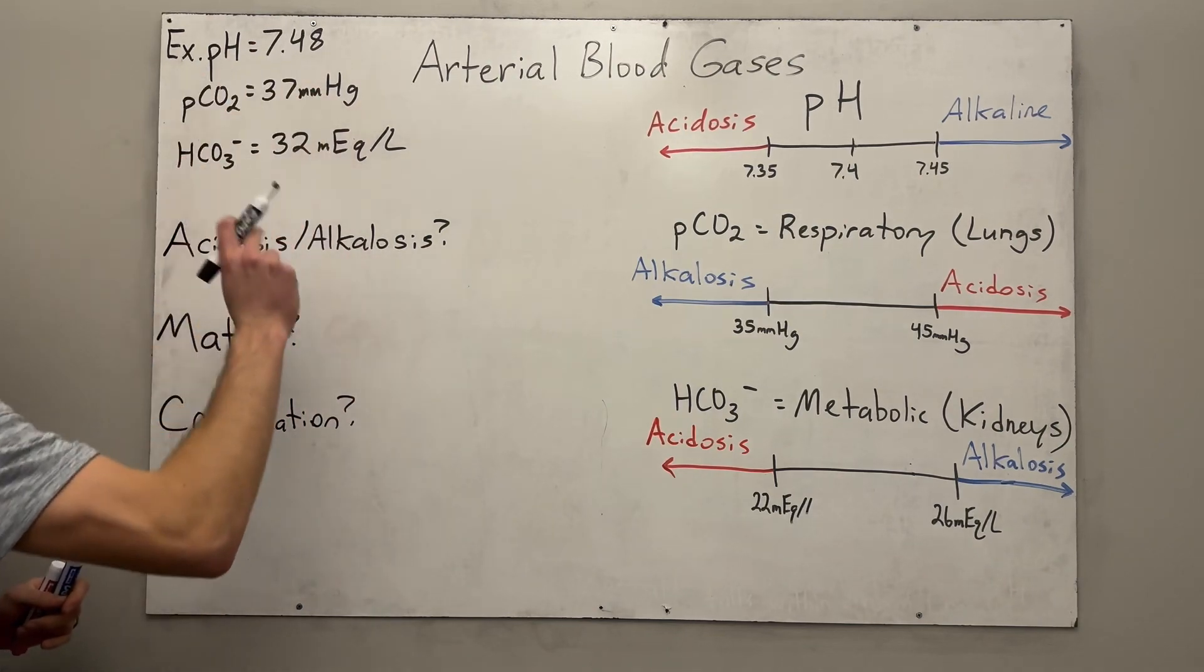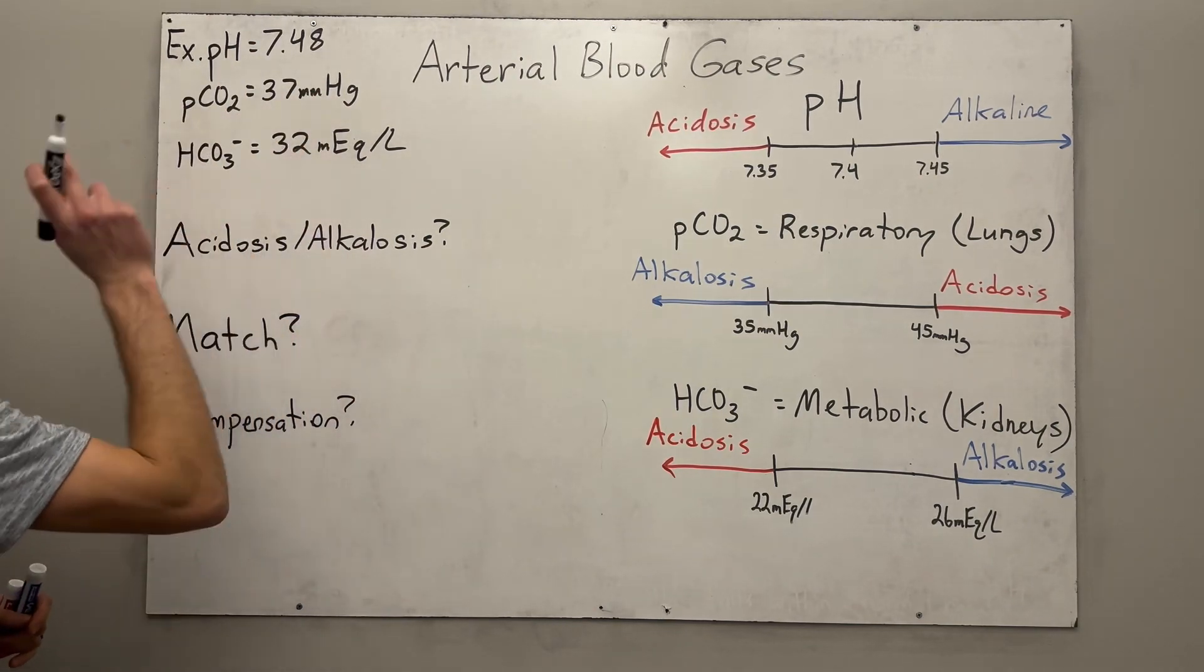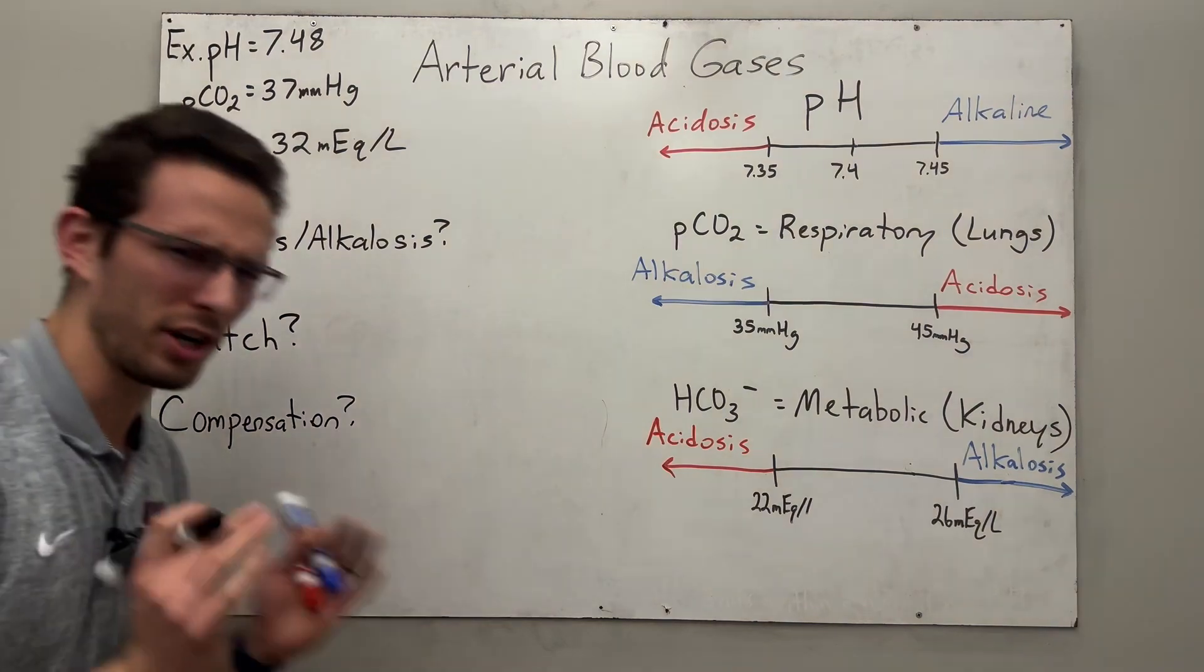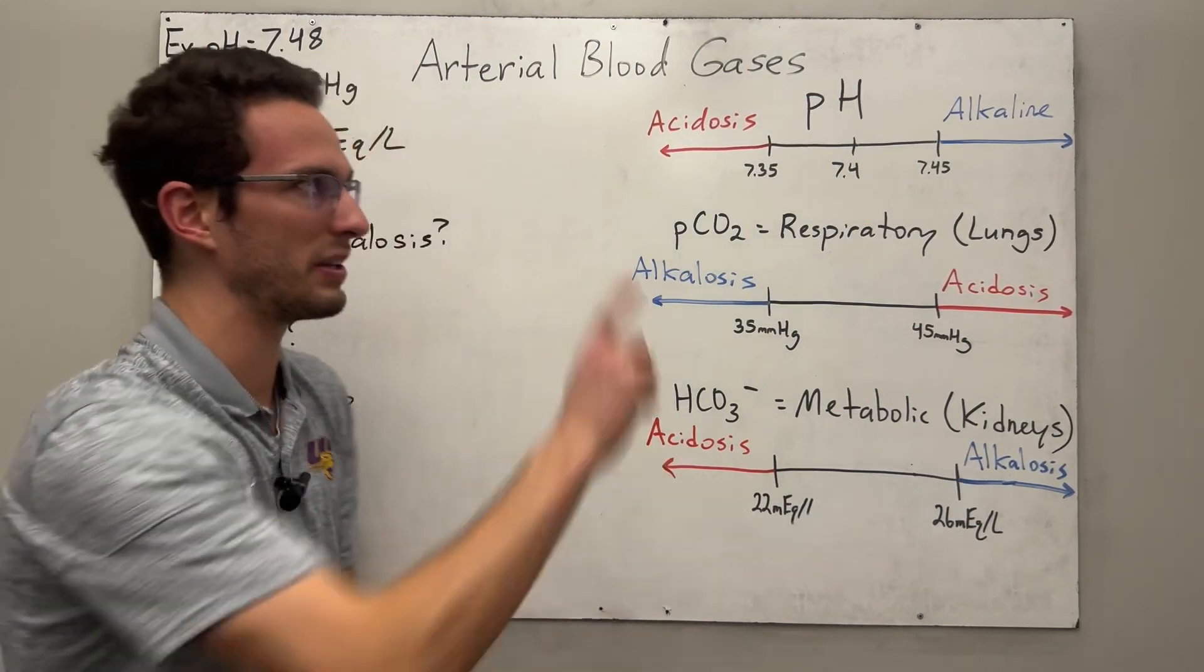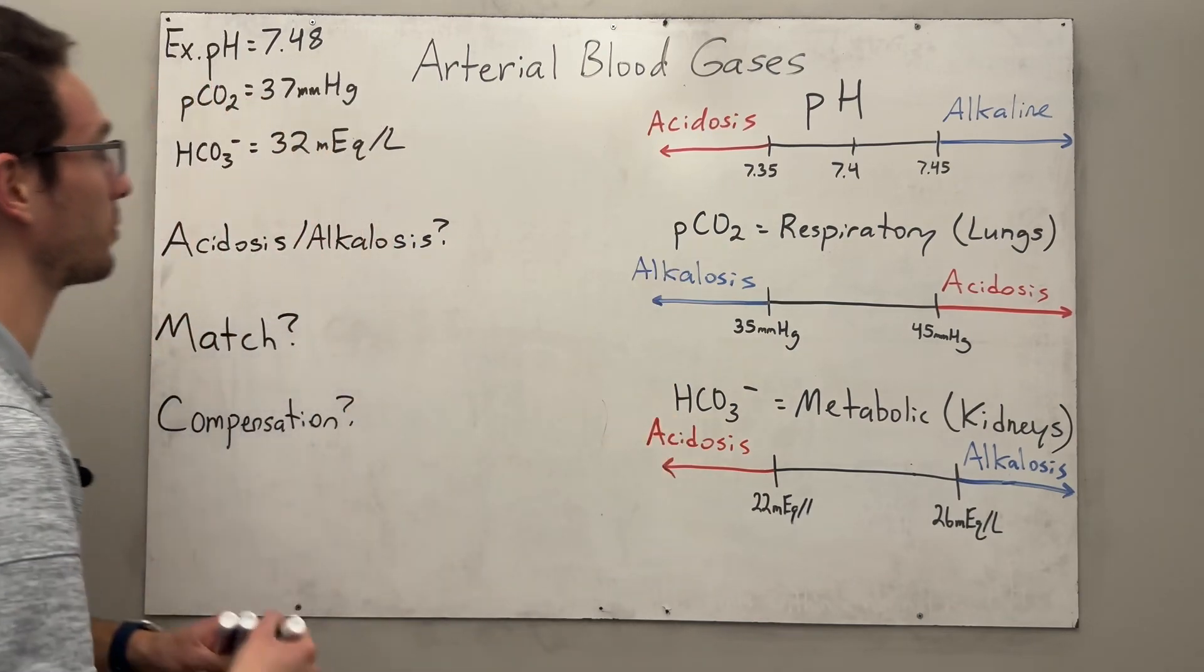So our pH is 7.48, carbon dioxide is 37, and then bicarbonate is 32. Now I'm going to go through a method that I call the AMC method. If you haven't watched my previous video, please check that out here. But we're going to move forward with it.